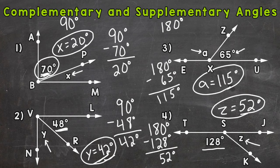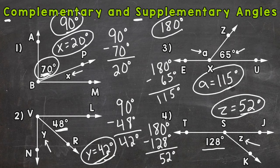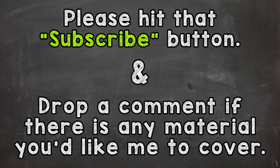One thing I want to mention before we end: here's how I remember which is which as far as complementary and supplementary. The C is a lower letter in the alphabet, so it aligns with the lower number — 90. S is further along in the alphabet than C, so it aligns with the higher number — 180. So there you have it — complementary and supplementary angles. I hope that helped. Thanks so much for watching. Until next time, peace.